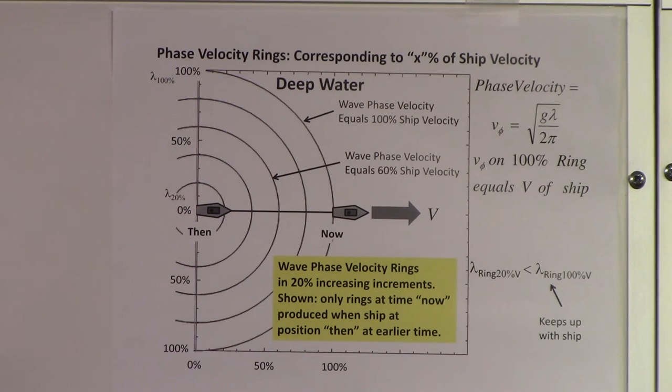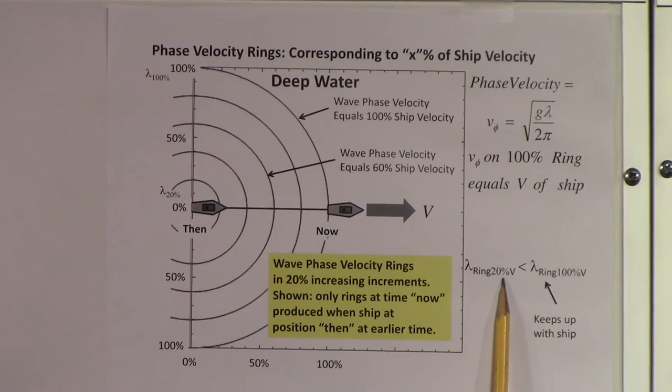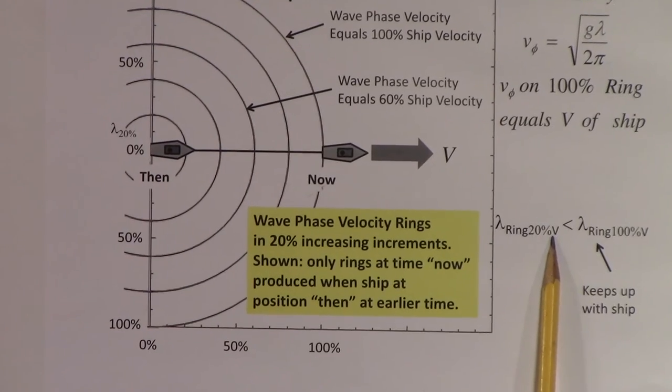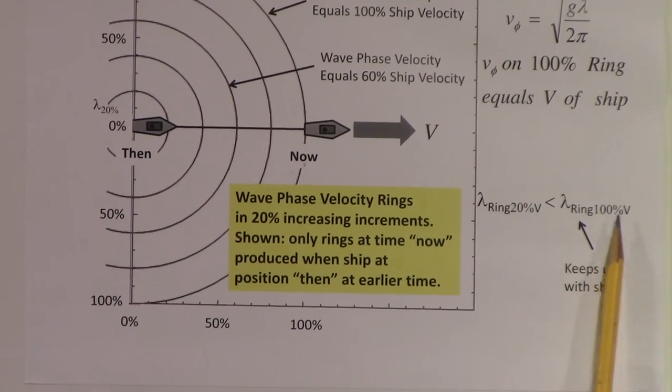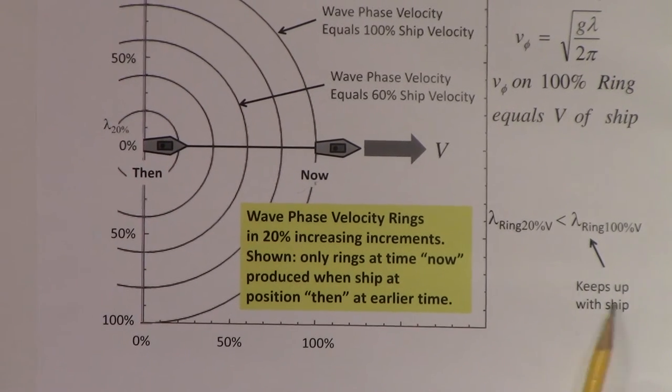I want to emphasize that we're showing only rings at time now produced when the ship was at position then. That was an earlier time. Over here I'm repeating the phase velocity that we talked about. When we have a phase velocity that's 100% of the ship velocity, that ring kept up with the ship. We're not saying that actually happens, we're just using that to put together a story, and that's what I refer to as the neat trick. The wavelength of the waves on the ring for the 20% of the ship velocity is going to be less than the wavelength of the waves for the waves that were traveling at 100% of the ship velocity.